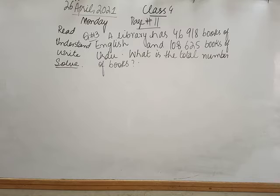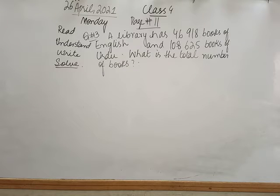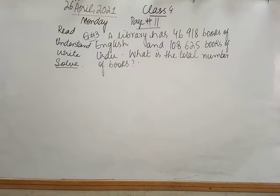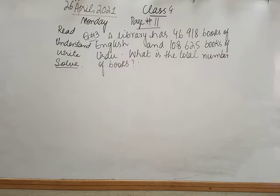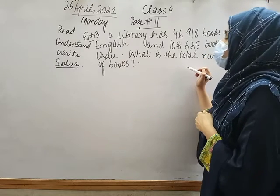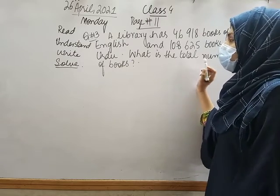What would we do in this question? What do you understand from this question? Very good. In the library, English books quantity is 46,918 and Urdu books quantity is 108,625. And in the end we have to find the total number of books. So for total, what will we do? Very good — we will add. Whenever in a word problem words like total, sum, add, or all together are used, we will add.